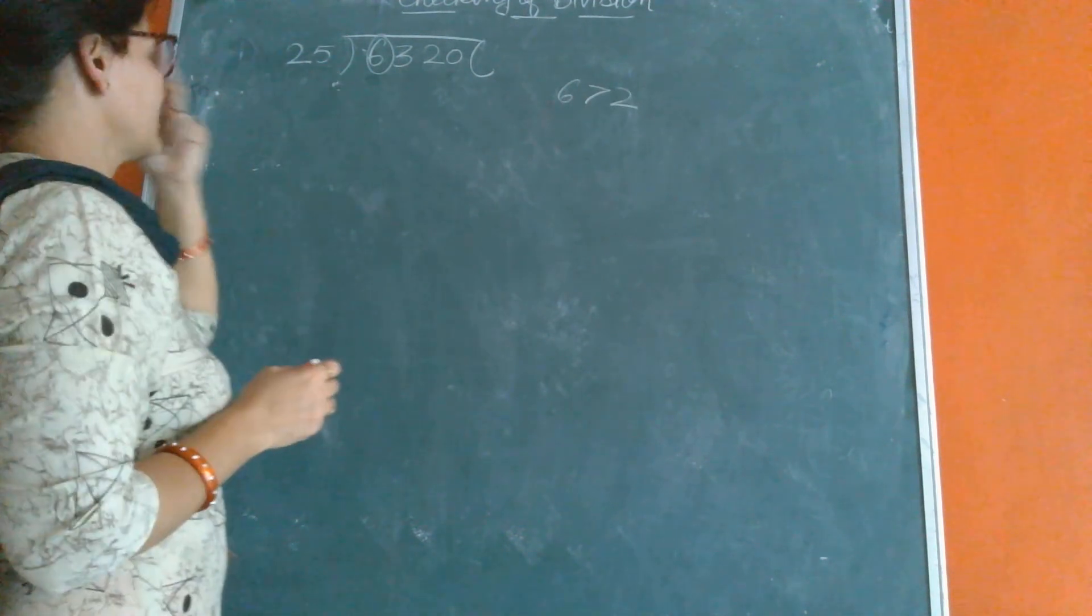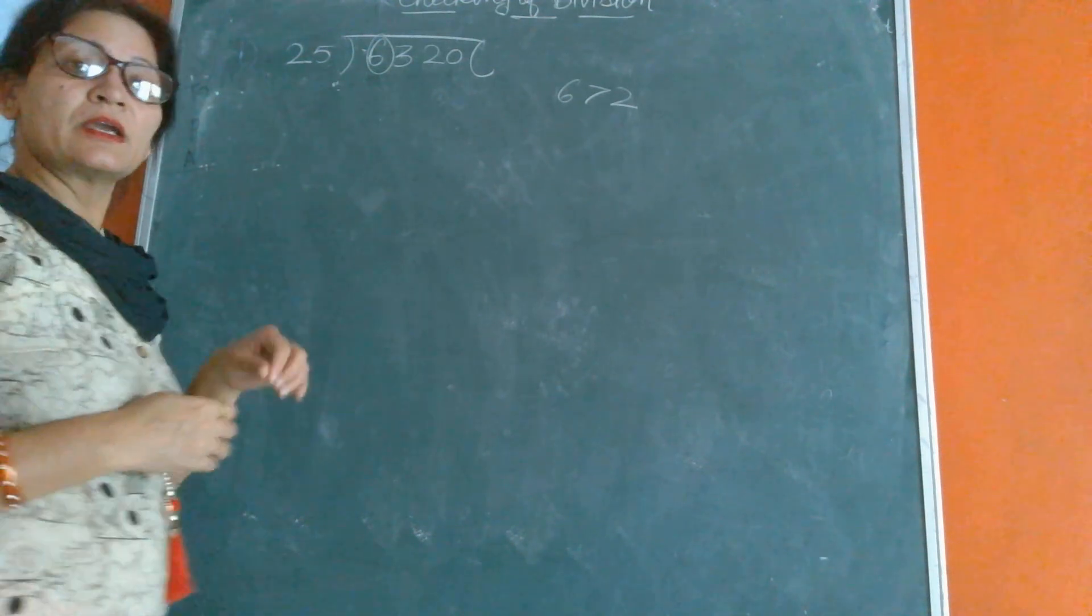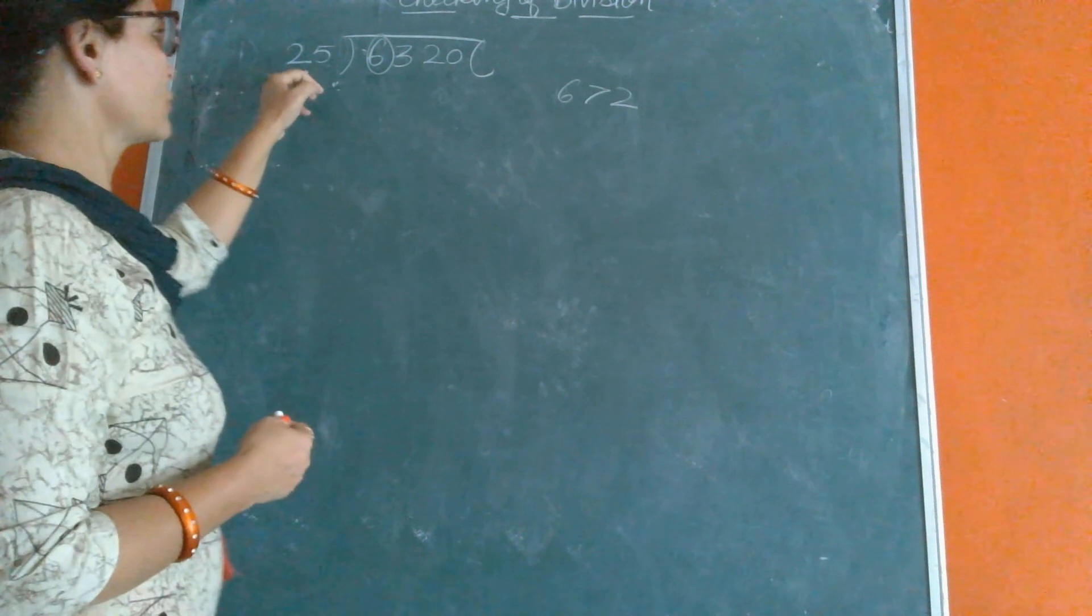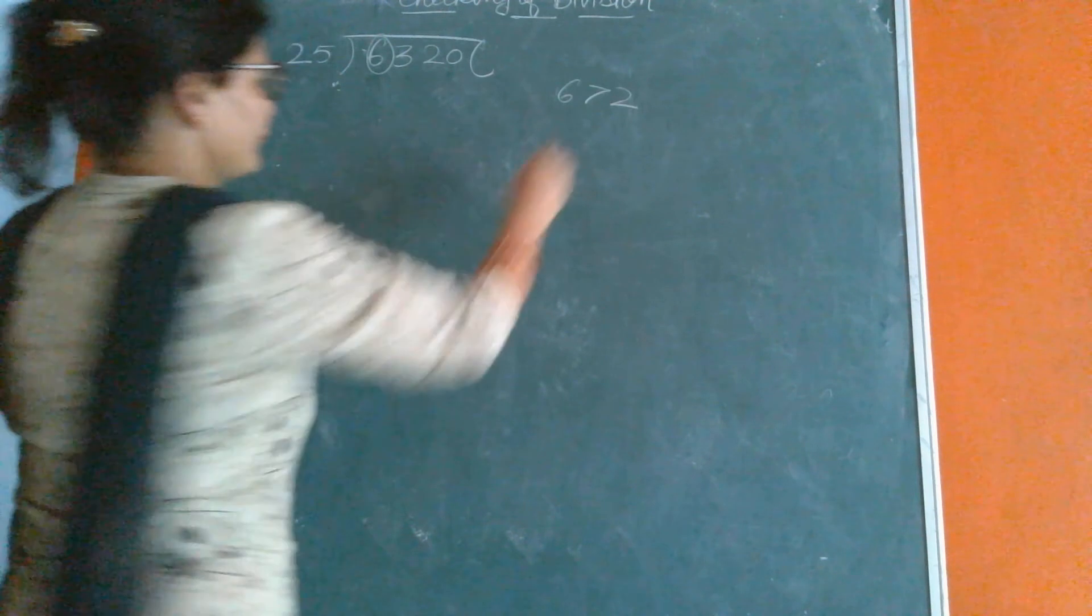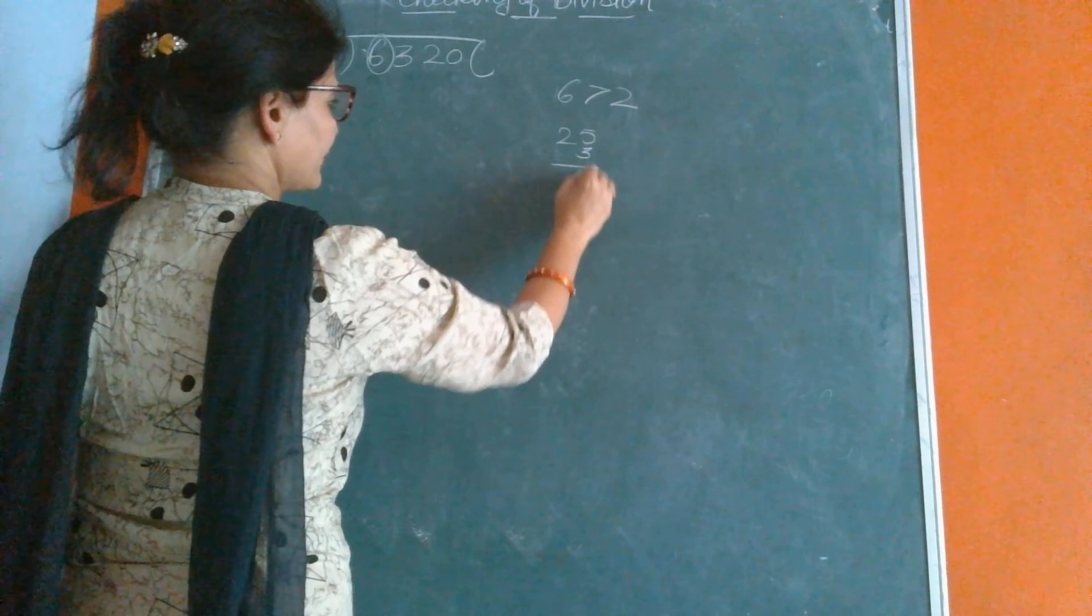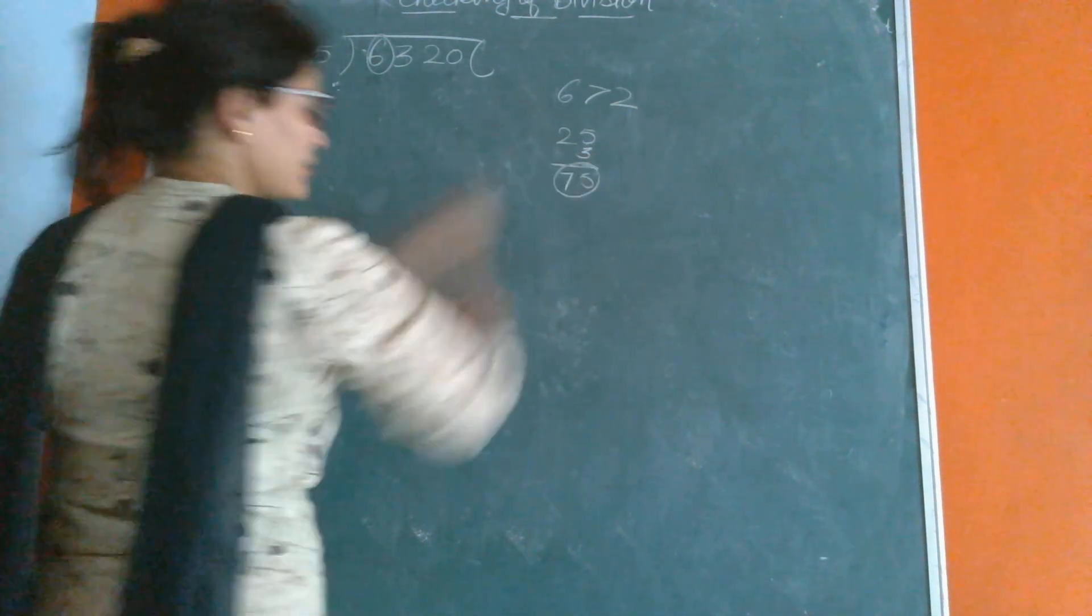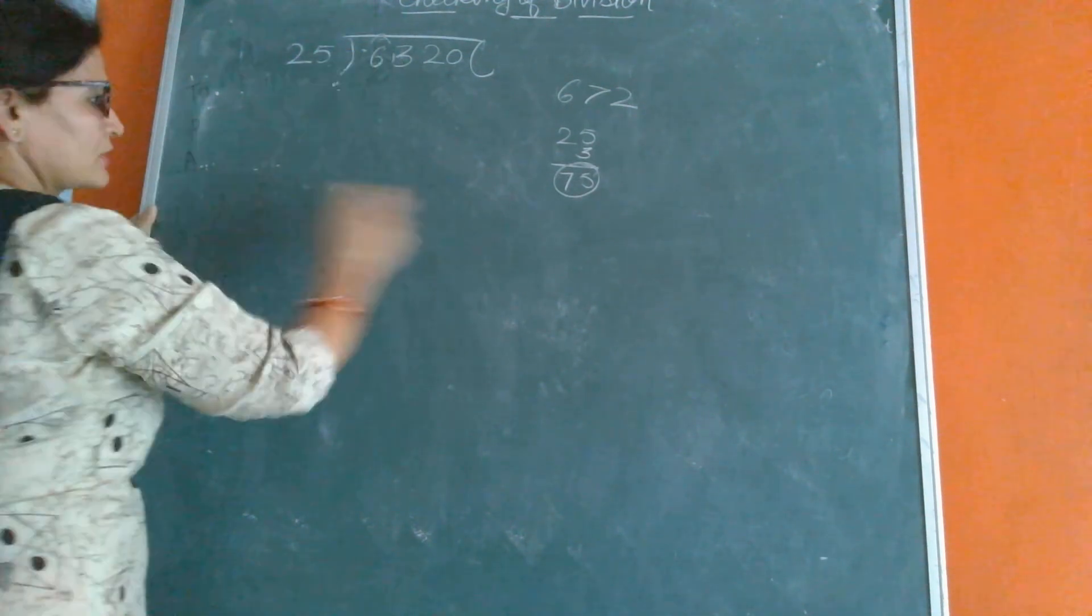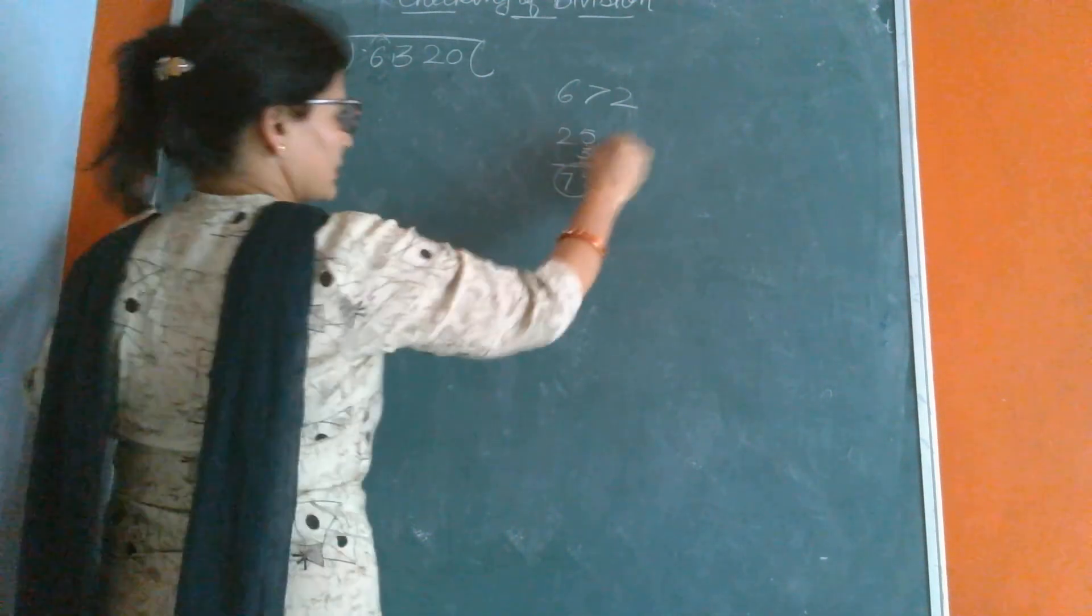Now we will take the table of 2. Is 6 in the table of 2 or not? 2 times 1 is 2, 2 times 2 is 4, 2 times 3 is 6. And if we multiply 25 by 3, 3 times 5 is 15, 3 times 2 is 6 plus 1 is 7. But 75 is greater than 63, so it is not possible to subtract from 63. So now we will take the upper number of 3.